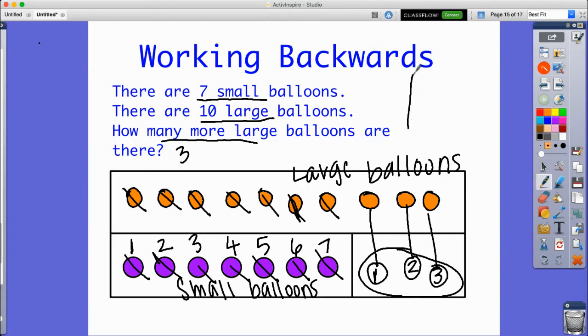I can represent this in a part-part-whole model. There's my ten large ones, the seven small, and the difference is three. So ten minus seven equals three.